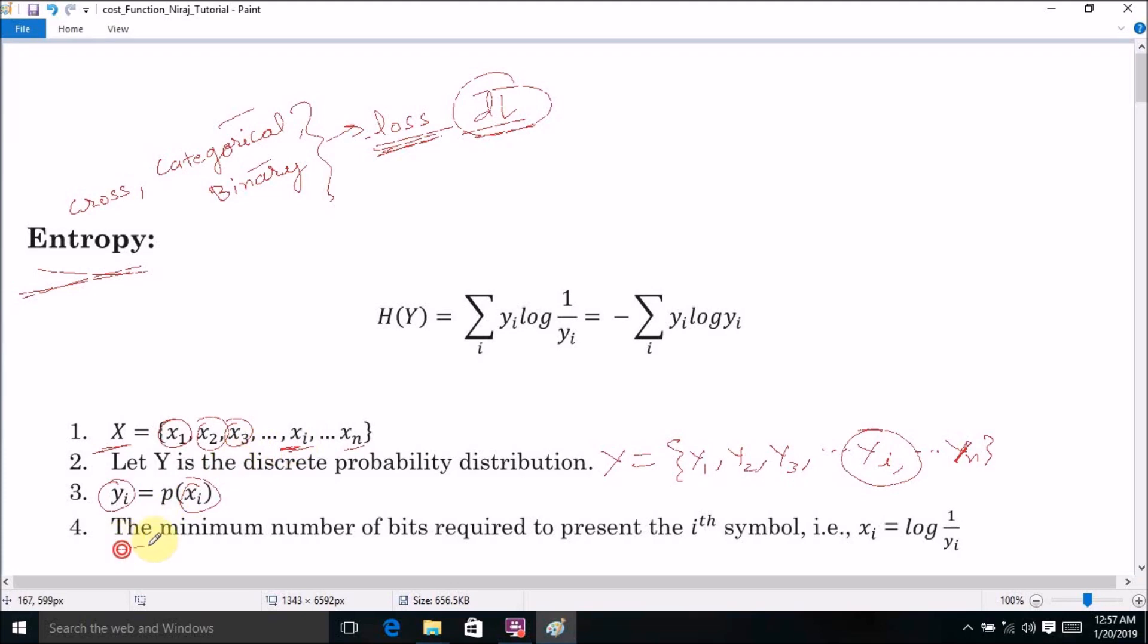Now according to the concept of entropy, the minimum number of bits required to present the ith symbol can be given as log of 1 divided by Yi. Now if we exploit the entire distribution Y to achieve the optimal number of bits per transmission through some channel, then the optimal number of bits will be known as entropy.